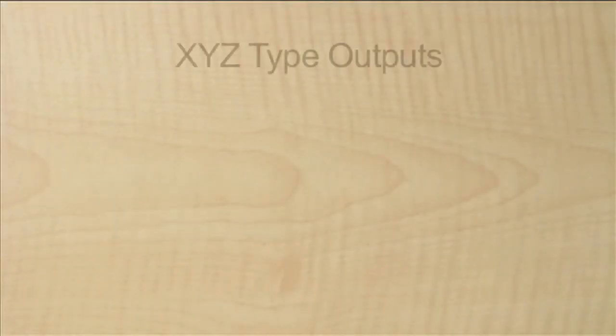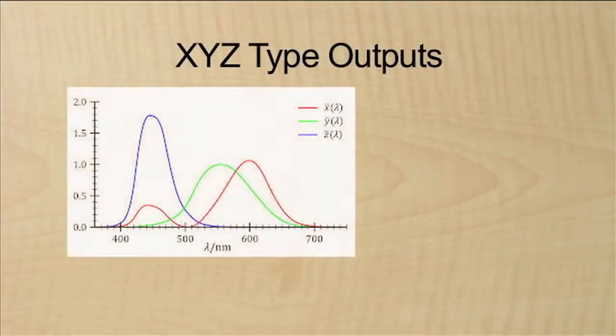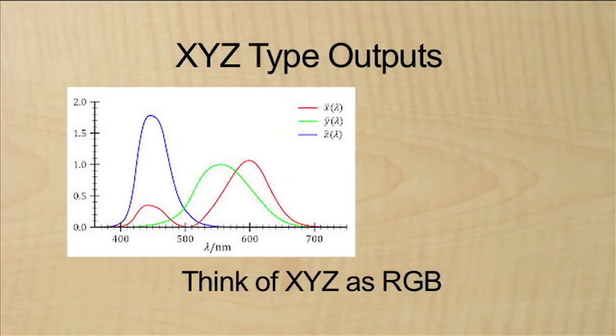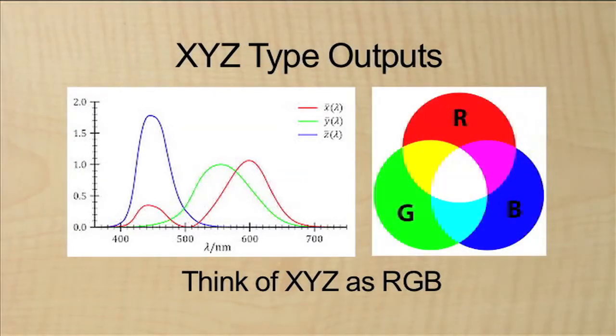Let's look at the XYZ type output first. From a practical perspective, think of the XYZ color space as providing an RGB type of output, with the XYZ outputs representing the red, green, and blue output signals respectively. The target color is represented in terms of the red, green, and blue components that make it up.